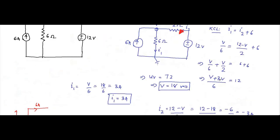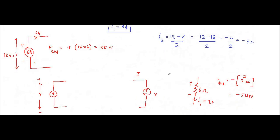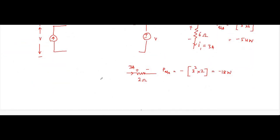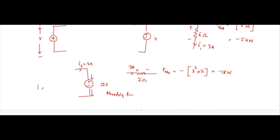For the 12 volt voltage source, current I2 = 3 ampere flows towards the positive terminal and away from the negative terminal, so it is absorbing power. Power absorbed = minus V × I = minus 12 × 3 = minus 36 watts.